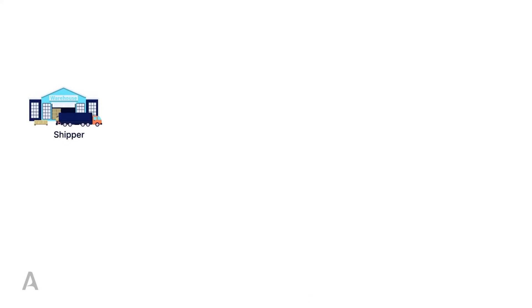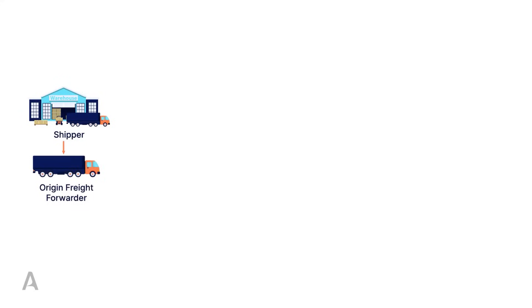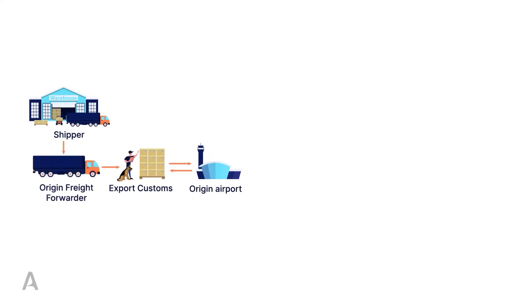We have the shipper, or commonly known as the consignor — the person who wants to send the cargo — who passes this to a freight forwarder, who consolidates the cargo based on the destination the consignment is flying to. The export process then begins, which includes customs clearance and handing over to the airline or their representative, the so-called ground handling agent.